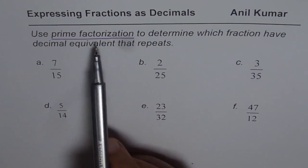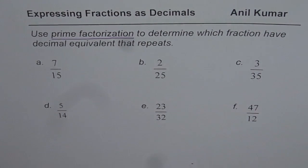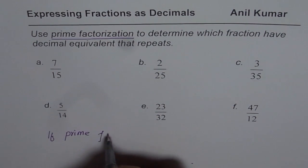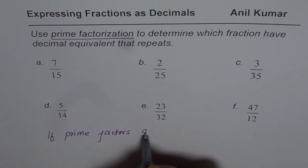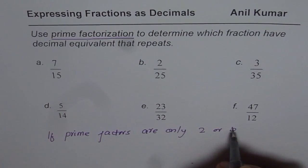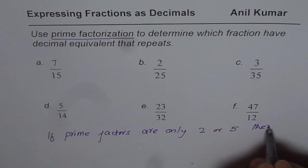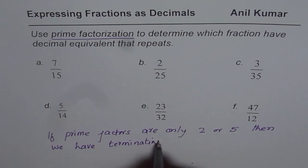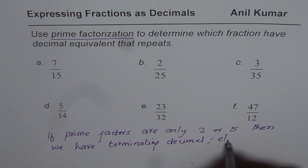Now from prime factors how do you know whether a fraction will have repeating decimal or not? The key is that if prime factors are only 2 or 5, then we have terminating decimal, otherwise repeating.